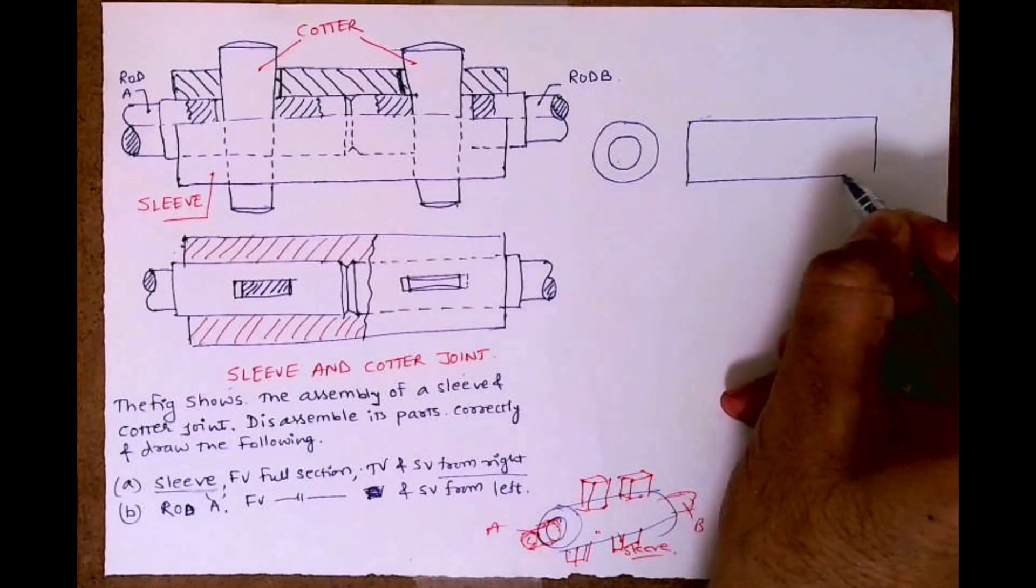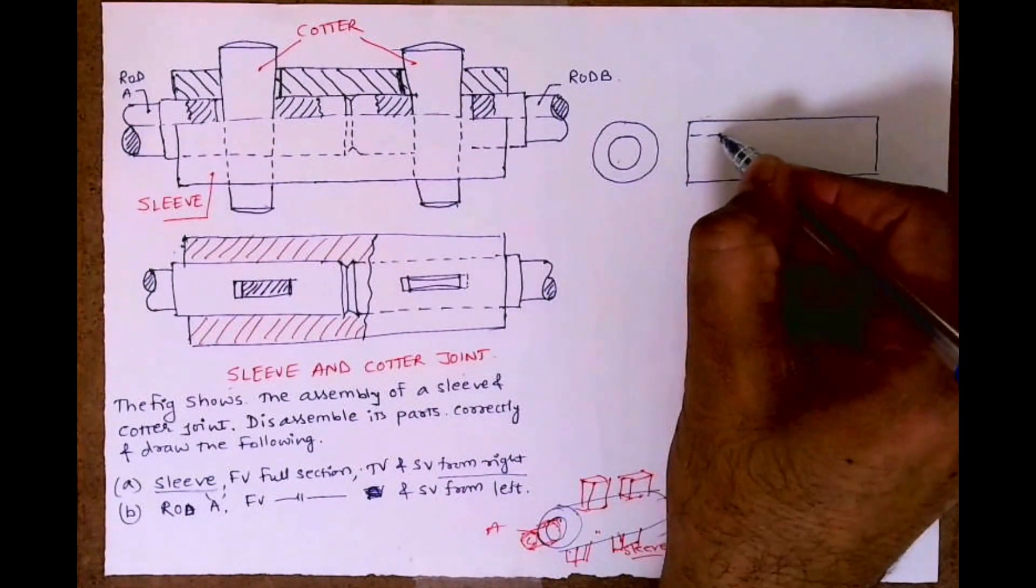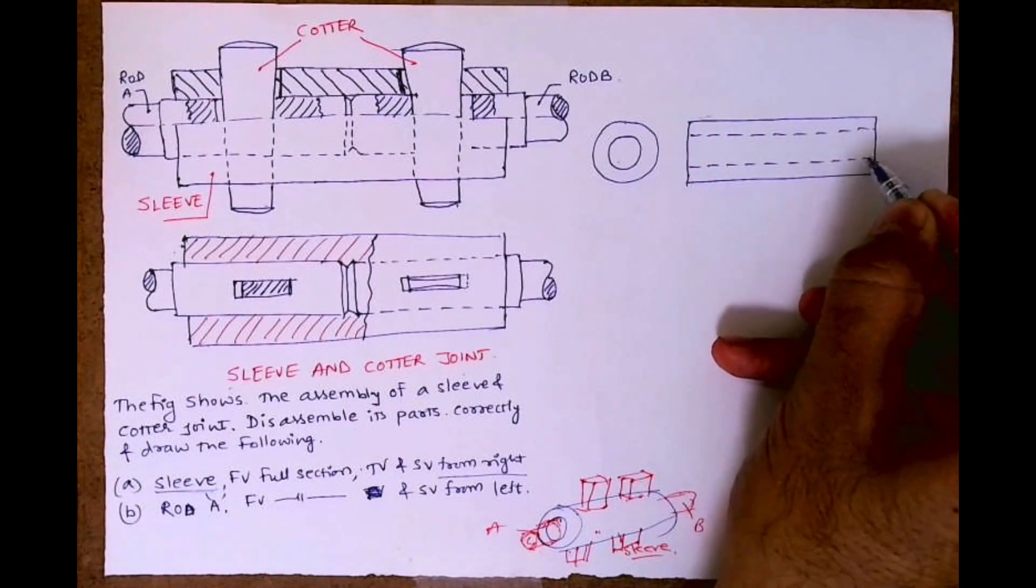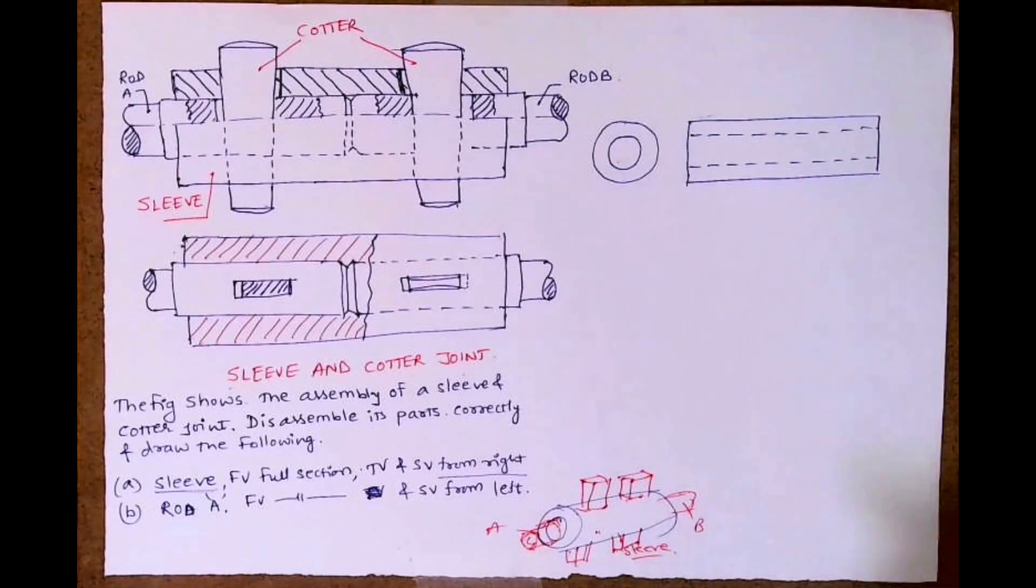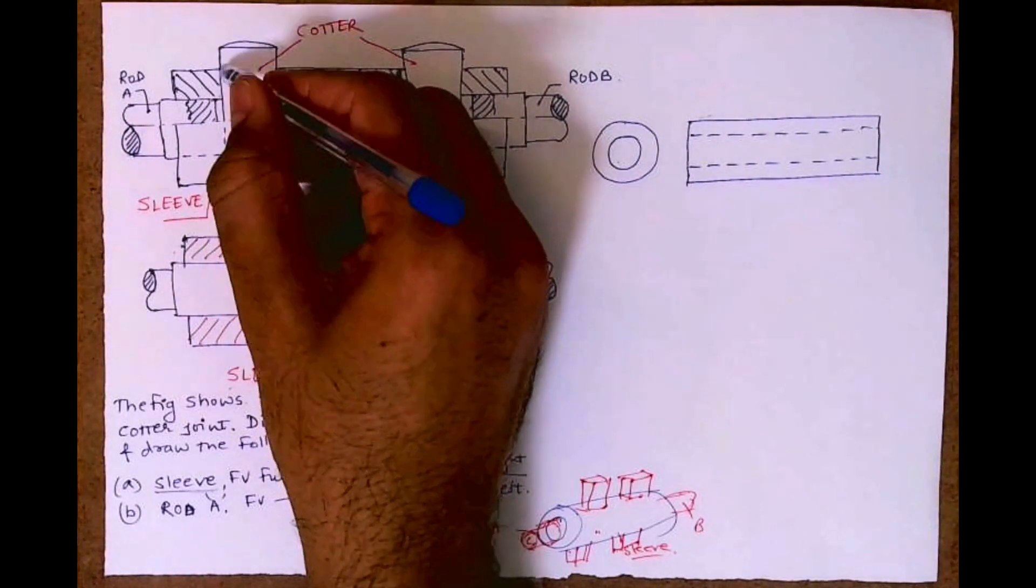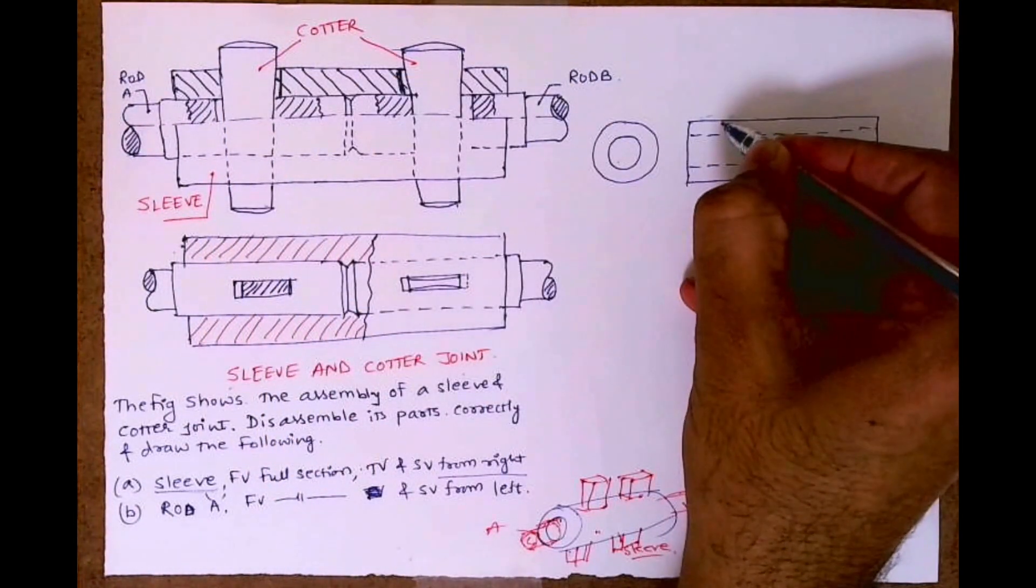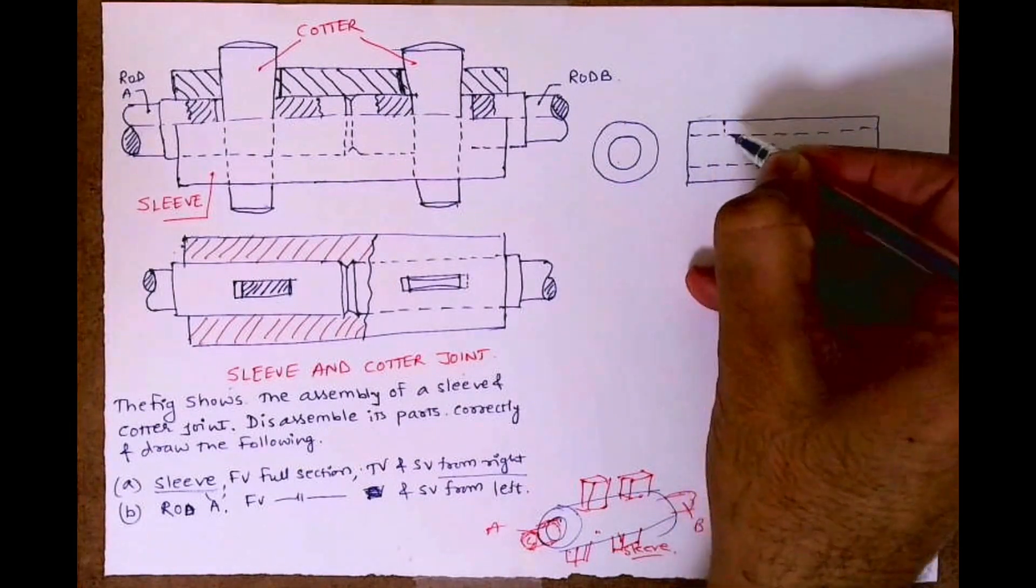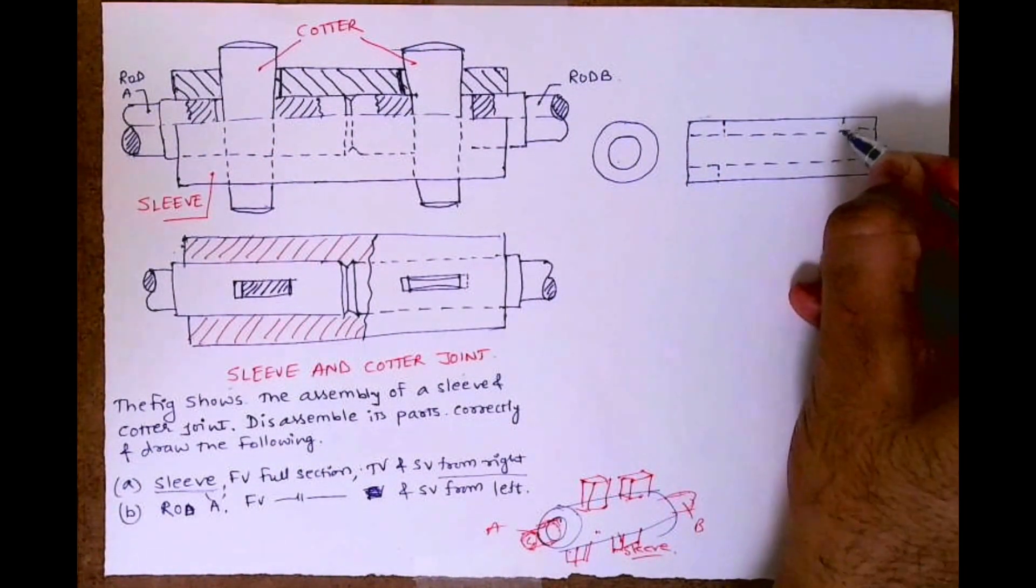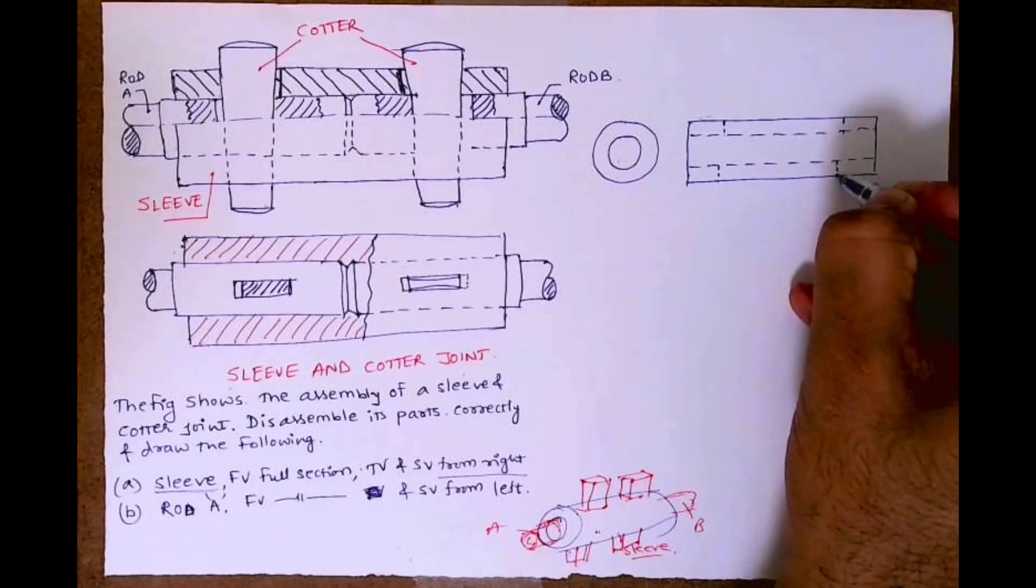In front view we'll draw a rectangle. This will be dotted, this will be dotted. Then see this part, this slot will be there for the cotter. See, dimensions and everything will be given to you so you don't have to worry about it.